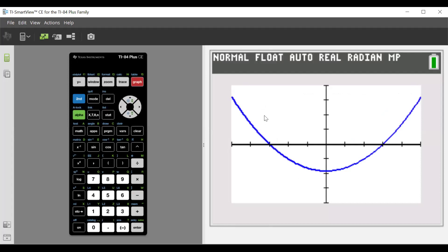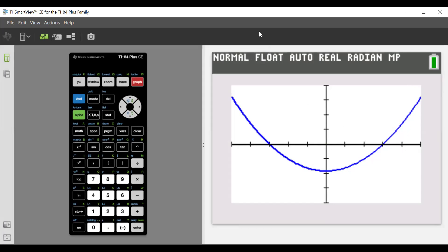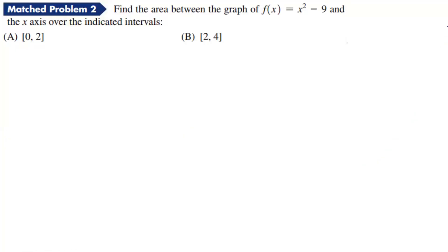We're going from zero to two for the first interval, and then two to four for the second. Notice that here the x-axis is going to be greater than f(x), and then f(x) is going to be greater than g(x) in the other region, so we'll have to write those in the appropriate manner. The graph goes down to negative nine, and the zero of the function is at x = 3.